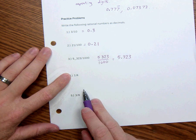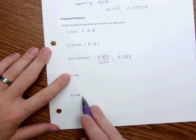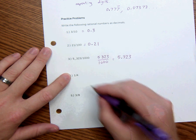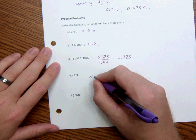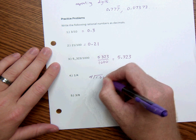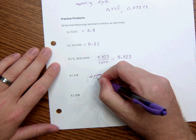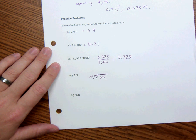We probably have this memorized, but the way you find them that are not over a multiple of 10 is you have to use long division. So we'll do 1/4. I think of it as 100 but I have to add these zeros in to make it work.